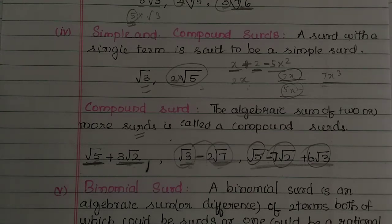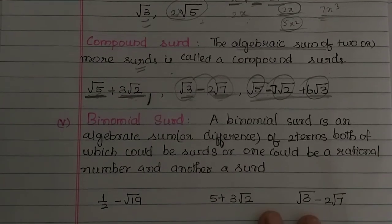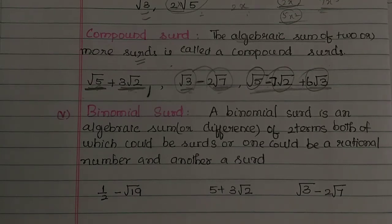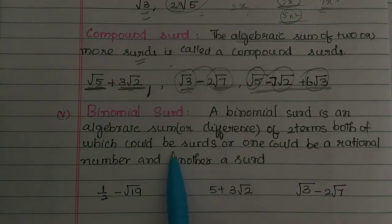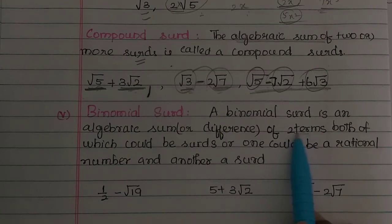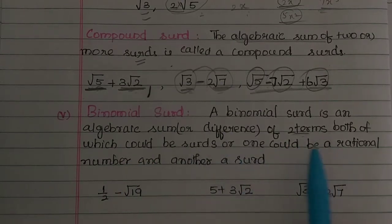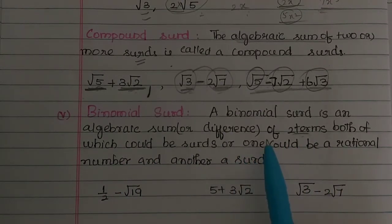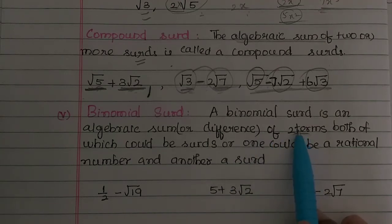A single term is a simple surd. A compound surd is the algebraic sum of two or more surds. Next is binomial surd. A binomial surd is an algebraic sum or difference of two terms — when two surd terms are added or subtracted together.